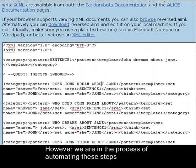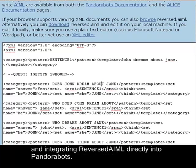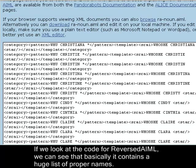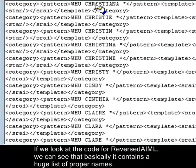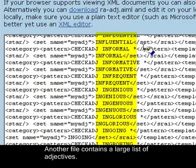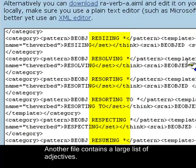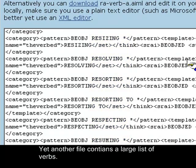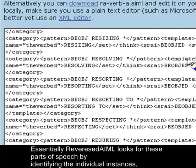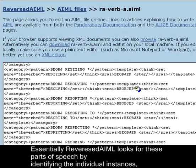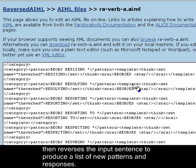However, we are in the process of automating these steps and integrating Reversed AIML directly into PandoraBots. If we look at the code for Reversed AIML, we can see that it contains a huge list of proper names. Another file contains a large list of adjectives. Yet another file contains a large list of verbs. Essentially, Reversed AIML looks for these parts of speech by identifying the individual instances, and then reverses the input sentence to produce a list of new patterns and responses.